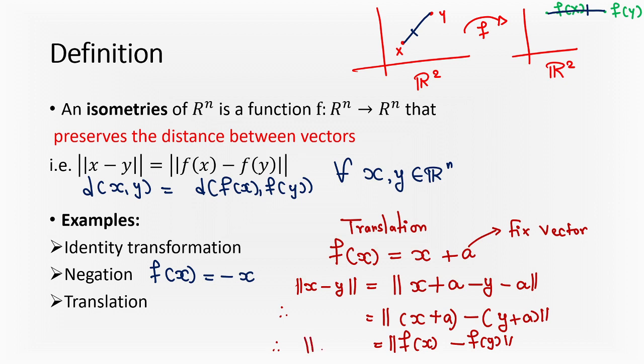So from this, what we can conclude? We can conclude translation is an isometry. Translation is also an isometry, identity and negation are also isometries. For negation, I will request students to write the proof - it is just two lines. There are multiple more examples of isometries. We will slowly see more and more examples. But for now, let me just consider one theorem in this video.